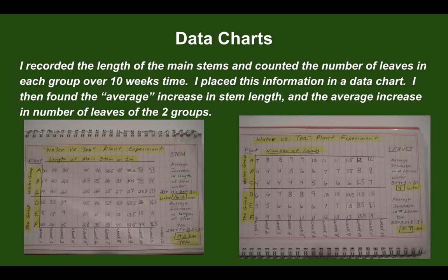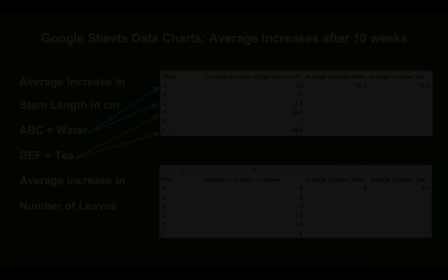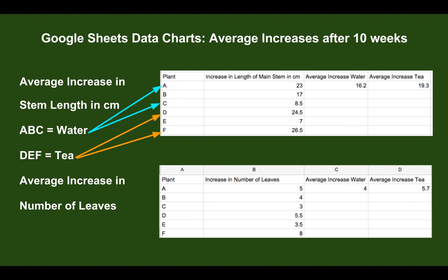As you can see, this is a lot of numbers and they might look messy. So what I did was put into the Google Sheet the average increase in plant stem length for water and for tea, and the average increase in number of leaves for water plants and tea plants. Now I have much easier data to work with.